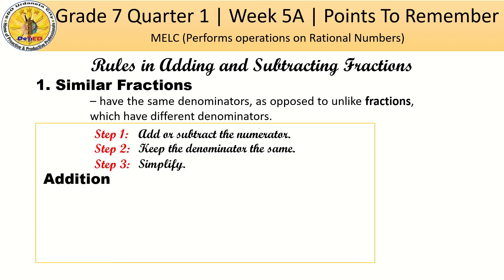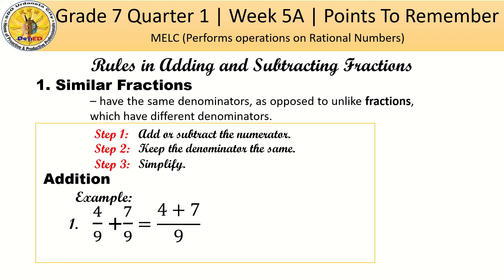Let's proceed to addition first. Example number 1: 4/9 plus 7/9. These are similar fractions — they have the same denominator, 9. Keep the denominator the same, just copy 9. Then 4 plus 7, since addition is the operation we need to perform, equals 11 over 9, or 11/9.